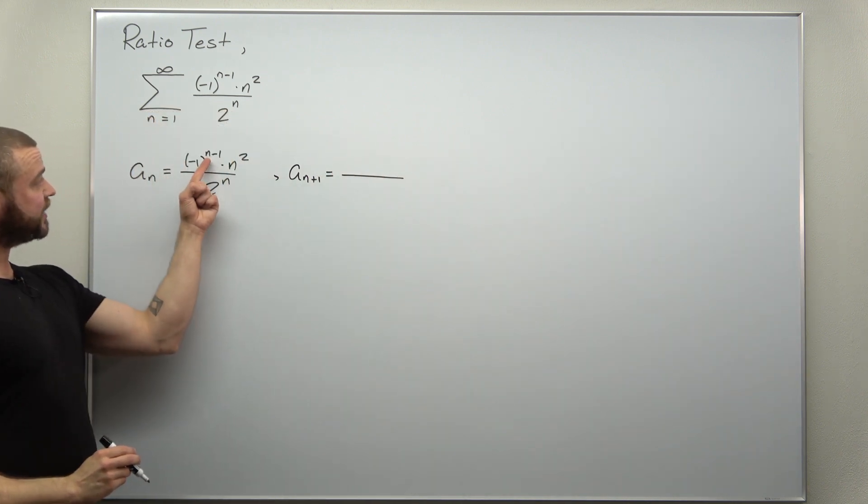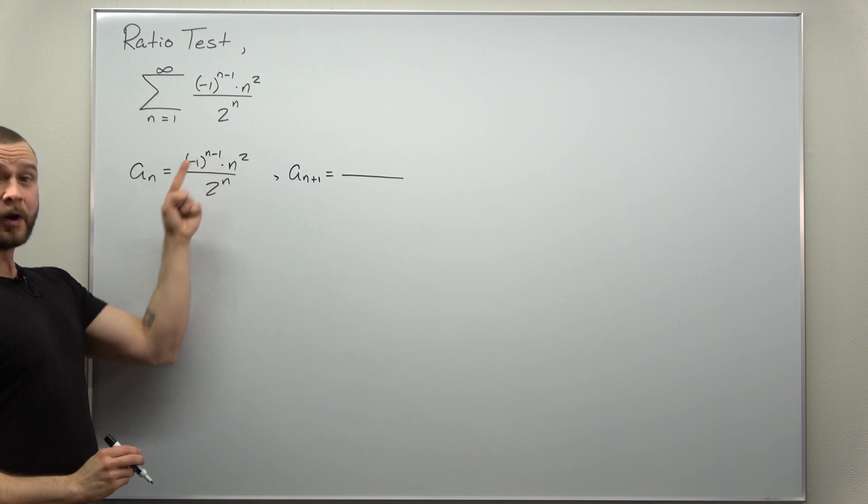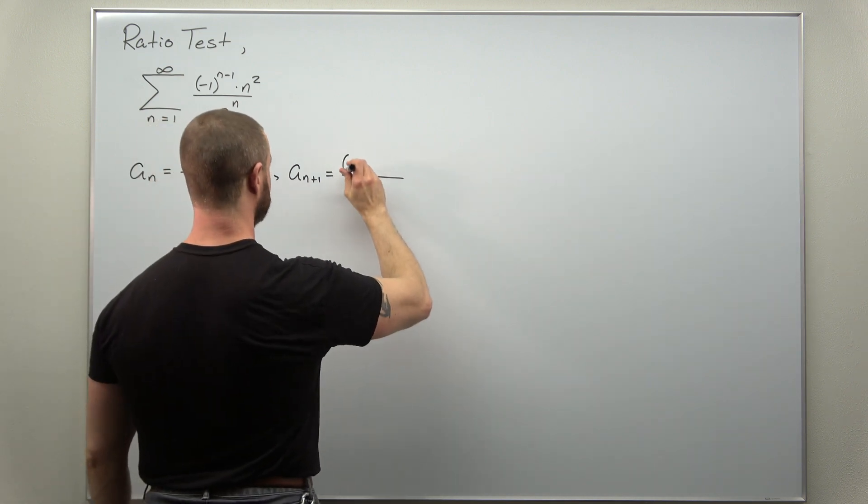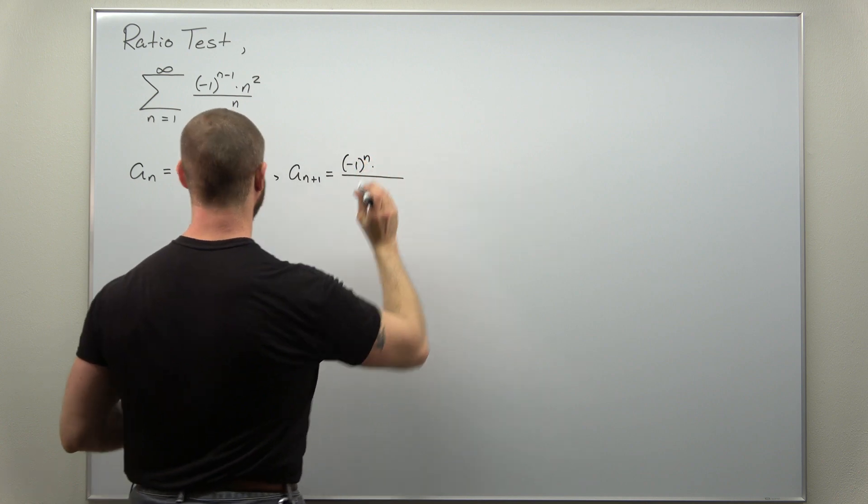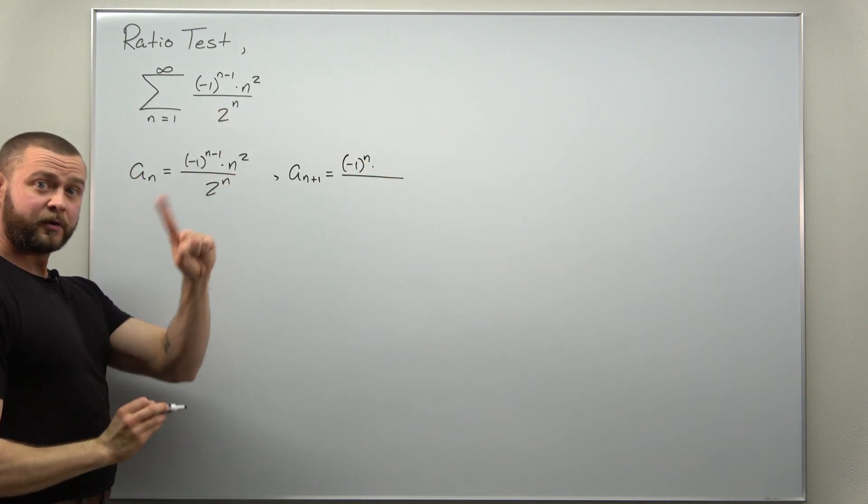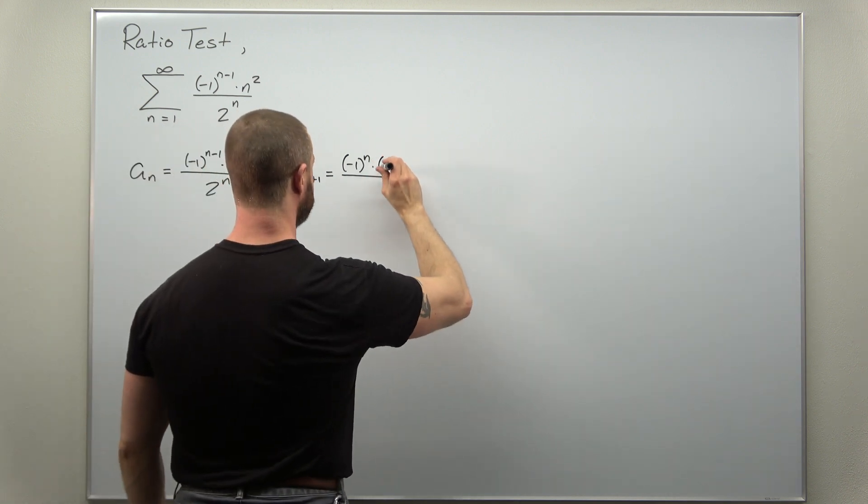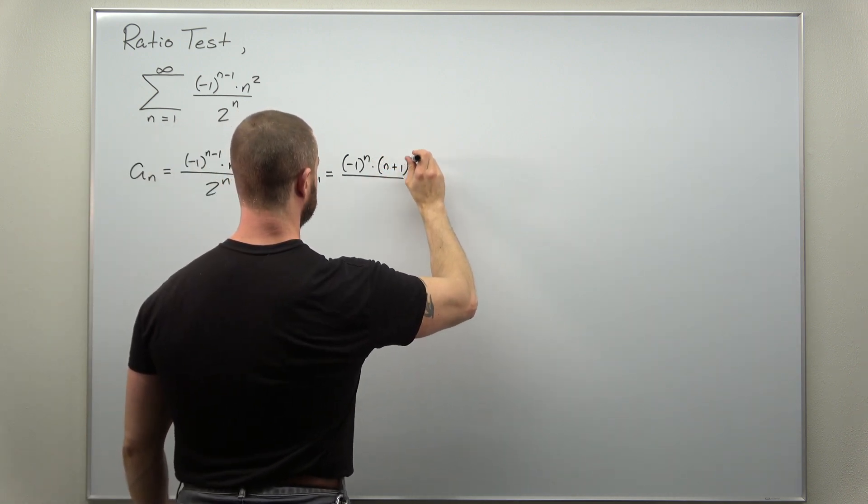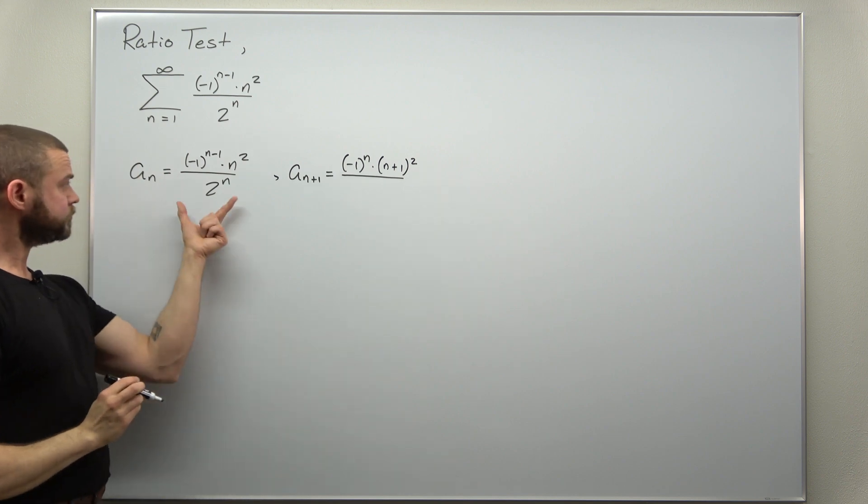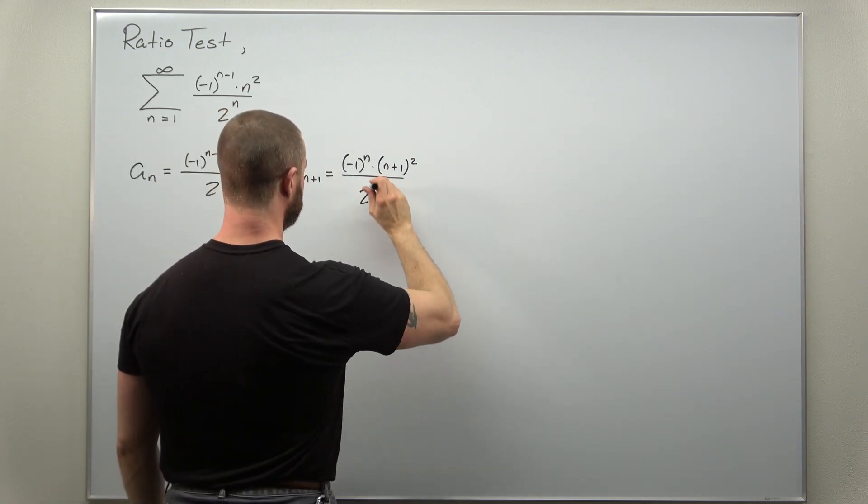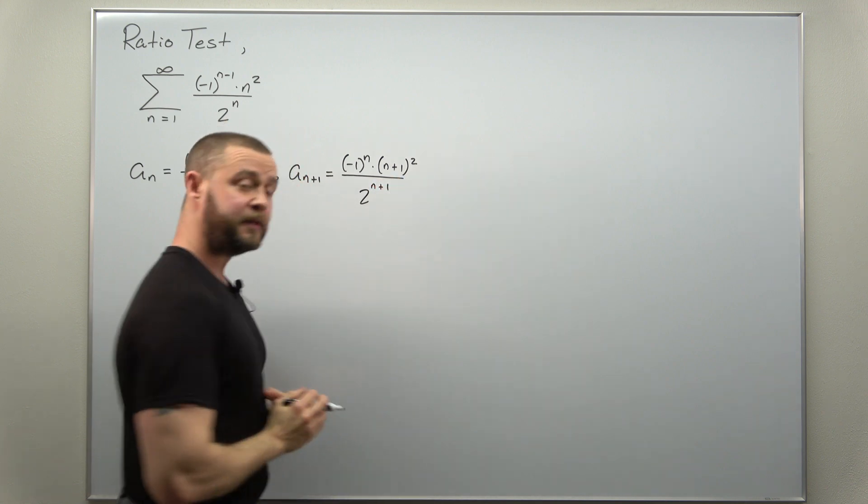All right, and if we replace that here, n plus one minus one, that'll just give us negative one to the nth power. n squared, replace the n inside with n plus one, we'll get n plus one squared. And in the denominator, two to the n, we replace there as well and get two to the n plus one.